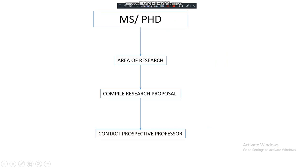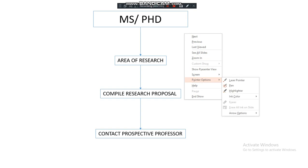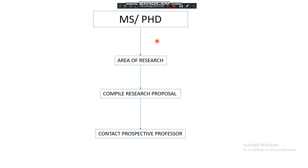Now let's look at the general process you have to go through when applying for these programs. For example, if you are from a physics background and applying for a master's or PhD, you must first finalize the research topic — specifically, which research area or branch of physics you are going to pursue for your master's or PhD.